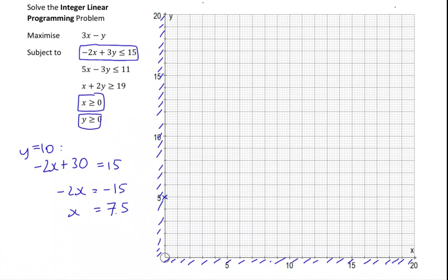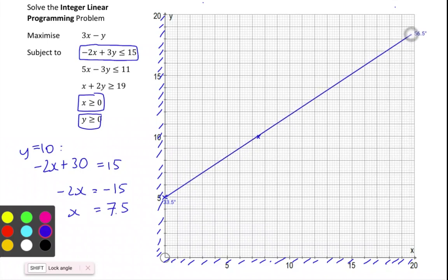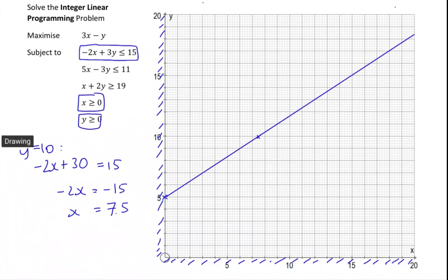So x is 7.5 and y is 10 should get me about there. Let's draw a line going through those two points. Now 0, 0 is not on the line so I can substitute that in. Is 0 plus 0 less than or equal to 15? Yes it is. So I want the region below so I'm going to shade the region above.